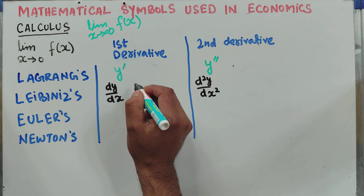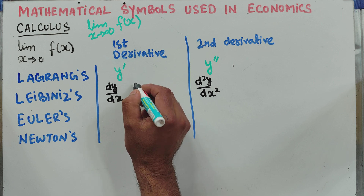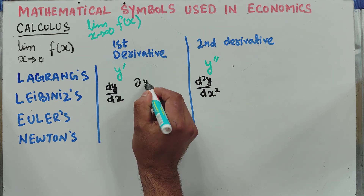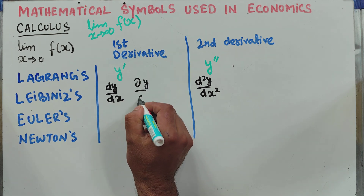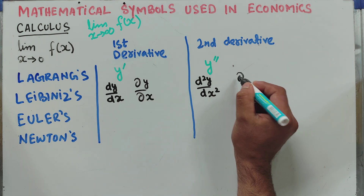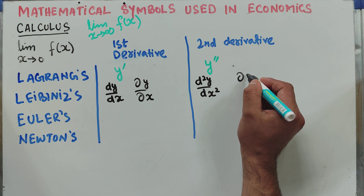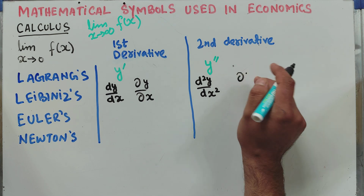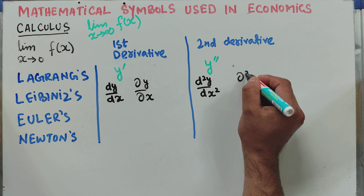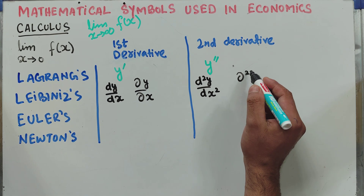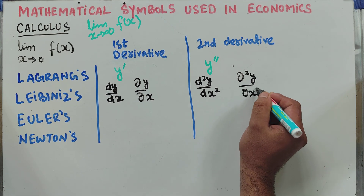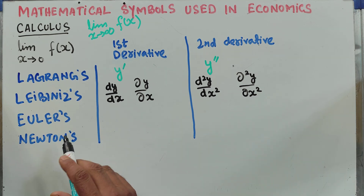If we have partial derivatives, you know that we denote them by this symbol: del y upon del x. Similarly, we have the second partial derivative written as del squared y upon del x squared.